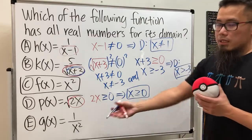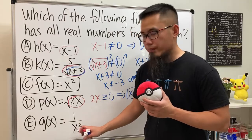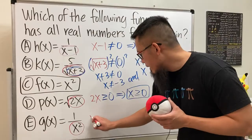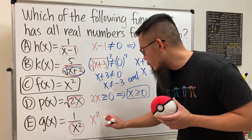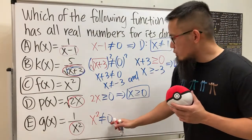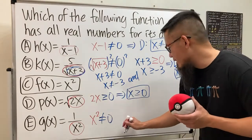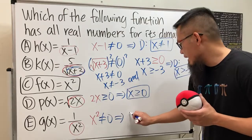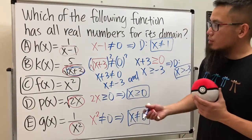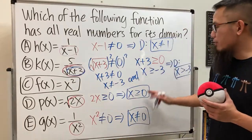For the last one, g(x) = 1/x², x² is in the denominator, so we set x² cannot equal 0. Taking the square root of both sides — plus or minus 0 is still 0 — so this tells us x cannot equal 0.